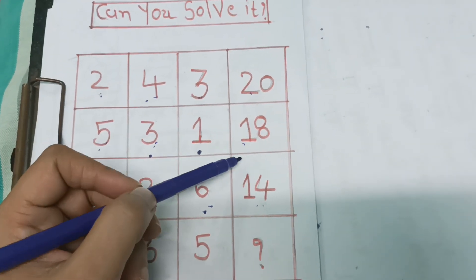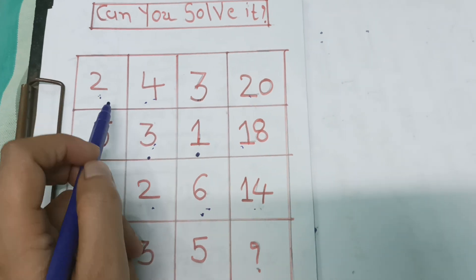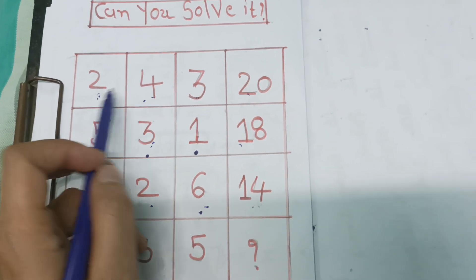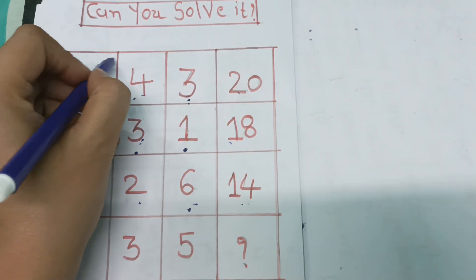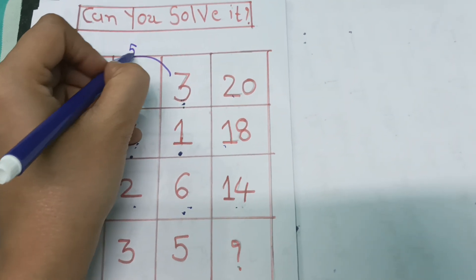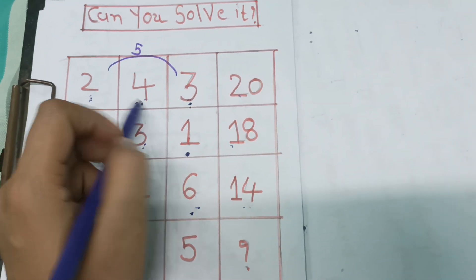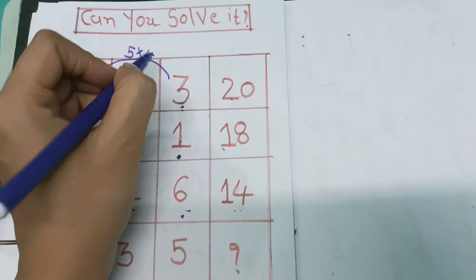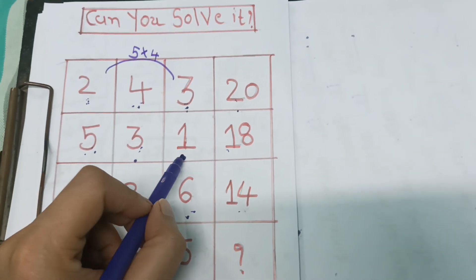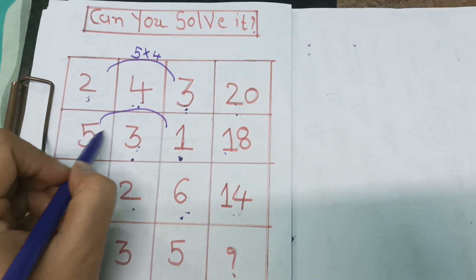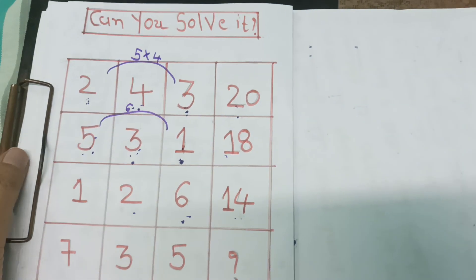But see here 2 and here 3. 2 plus 3, that is 5, and 5 fours are 20. See here 5 plus 1, that is 6. 6 threes are 18.